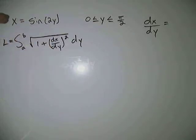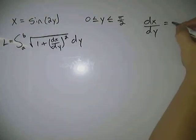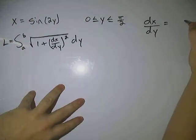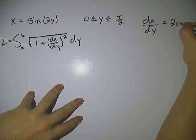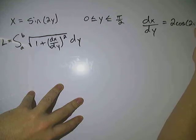So dx over dy right here, that's going to be the derivative of this with respect to y. So if we take the derivative of sine 2y with respect to y, we're going to get 2 cosine 2y.